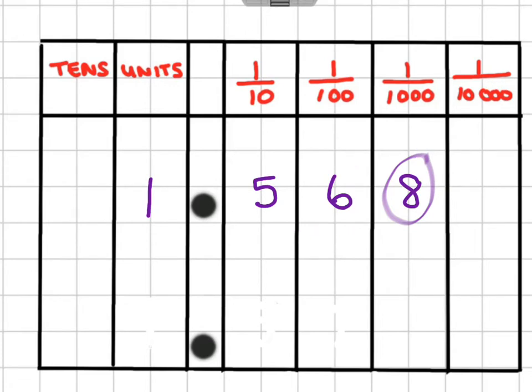Now let's see, are we going to change the 6? Yes, we are. Why? Because 8 is bigger than 5. Remember, it's 5 and up that changes the digit. And 8 is bigger than 5, so we're going to add 1 onto 6. It's going to be a plus 1 here, which is going to leave us with the answer of 1.57.